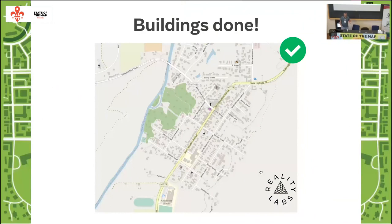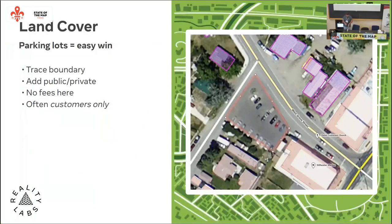Once all buildings were done, the map started looking much more impressive — buildings really bring things to life compared to just roads. In parallel, I mapped land cover, especially parking lots. Their geometry is often just a big square and they're frequently unmapped. OpenStreetMap has great potential as the only map database with thorough parking data. Lots can be marked as public or private, with a fee, or as customer-access only.